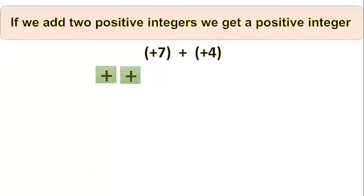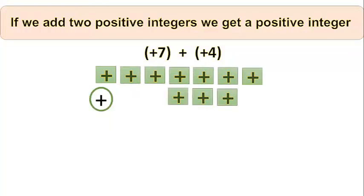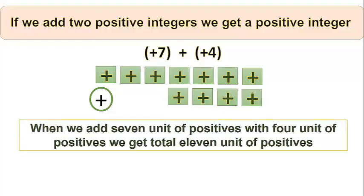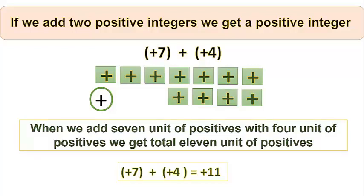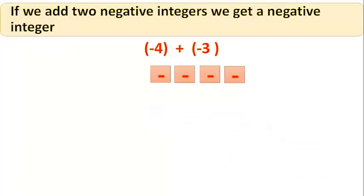We consider plus 7 and plus 4 and add them. Let us use the multipurpose board to check this addition. On top we have 7 positive symbols and below we have 4 positive symbols. Adding all together, the result is 11 positive symbols.